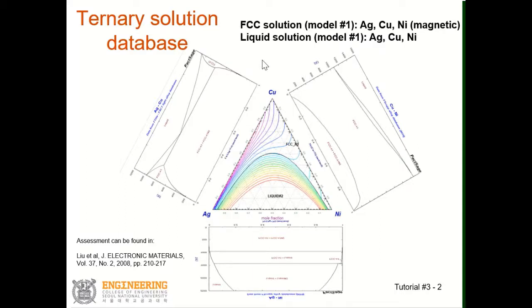So it is rather simple to do the ternary modeling. One thing you have to be careful about in this FCC solution is that nickel is magnetic — nickel has a certain magnetic property. So when you create the FCC solution, you have to consider the magnetic property as well.